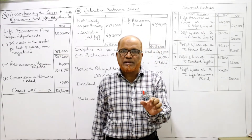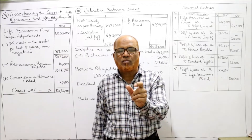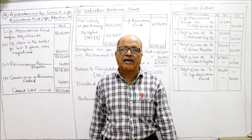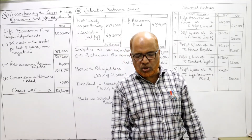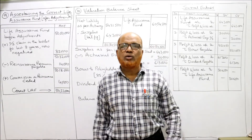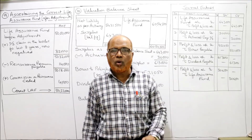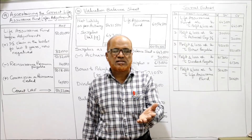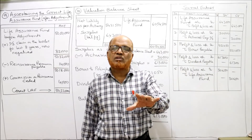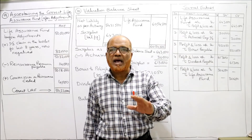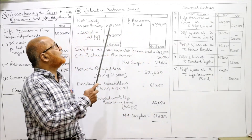First, take the surplus from the life assurance fund. After making appropriations, whatever money is saved is transferred back to the life assurance fund. The problem asks us to pass journal entries to give effect to the directors' resolution: find out the net surplus; out of it, 85% will be bonus payable to policyholders, 10% will be dividend payable to shareholders, and the remaining balance will be carried over to the life assurance fund.